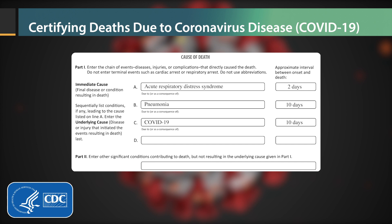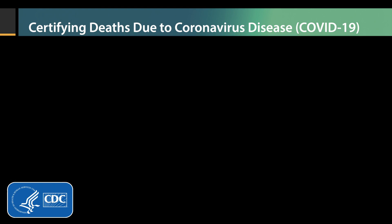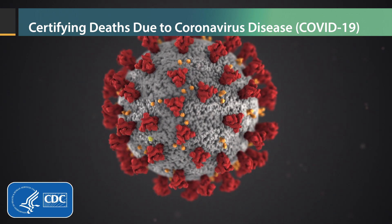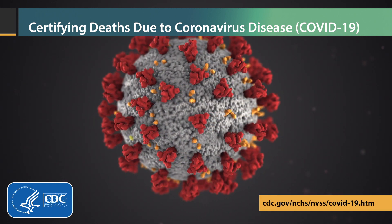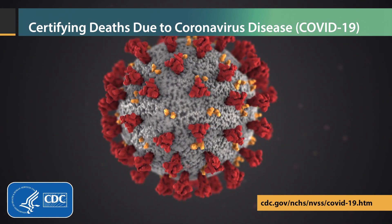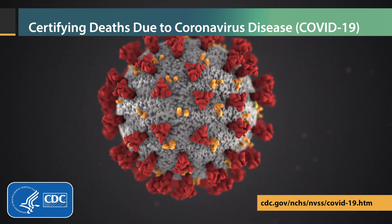Remember, if COVID-19 is determined to be a cause of death, it should be reported on the death certificate. Report an underlying cause that is specific, along with a logical sequence of conditions to which it gave rise in Part 1, and comorbidities in Part 2. By reporting a specific underlying cause with a logical sequence, you will be doing your part in ensuring the quality of cause of death information, which is needed to understand and fight this pandemic.